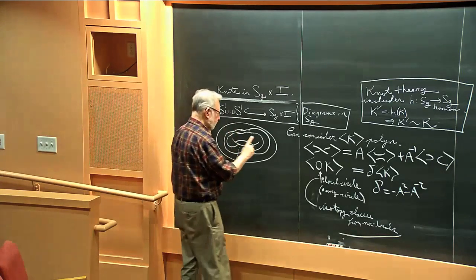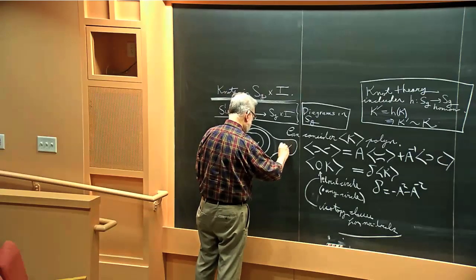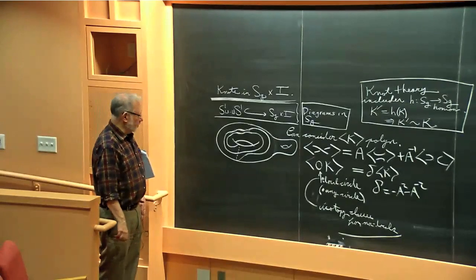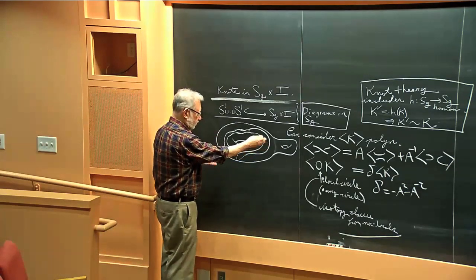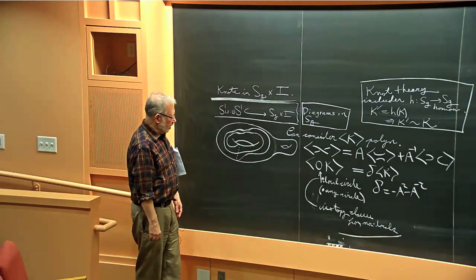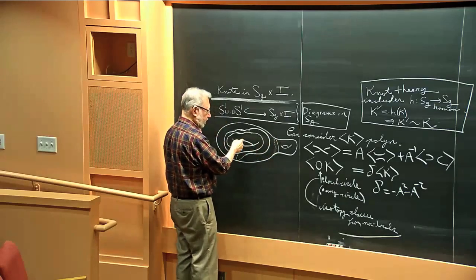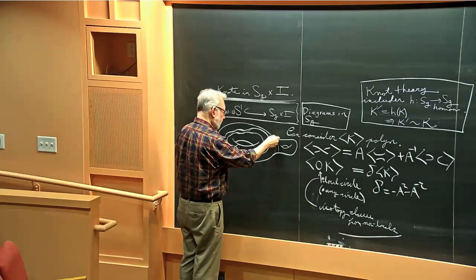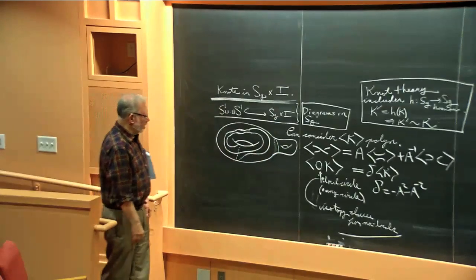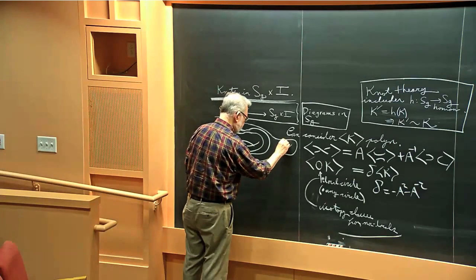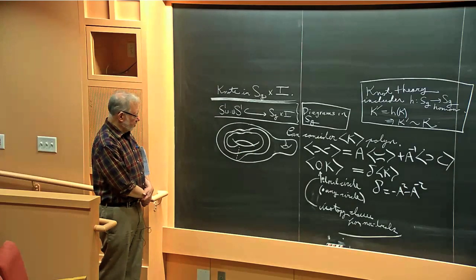Suppose it was a higher genus surface, but suppose the knot isn't really living on the other handles. Then this knot, in some moral sense, is not a knot in the double torus — it's really a knot in the torus. So I could allow stabilization: I'm going to allow myself to find a curve disjoint from the diagram in the surface cross I, do surgery on that curve, cut it out, and replace by discs, throwing away the handle.